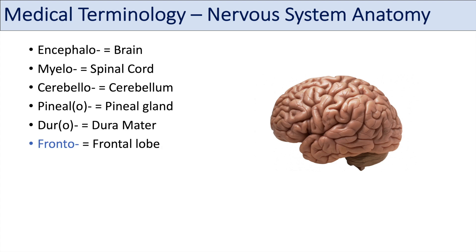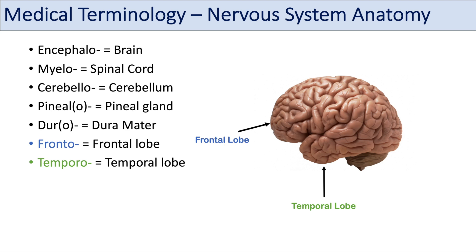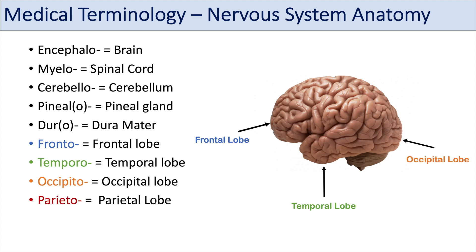Another prefix involving the brain is fronto, which relates to the frontal lobe of the cerebrum. Another prefix is temporo, relating to the temporal lobe. Another one is occipito, meaning occipital lobe. And the last prefix for the brain lobes is parieto, which stands for the parietal lobe.